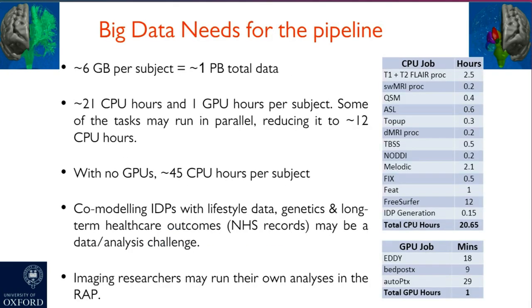The pipeline has big data needs. For example, it generates six gigabytes of data per subject, which totals one petabyte overall. The whole processing of one subject takes 21 CPU hours and one GPU hour. Although some tasks can run in parallel, reducing this to 12 hours, without GPUs the processing would take almost two days. Another big data challenge is that finding associations between IDPs and other variables can be difficult because the matrices are really large.